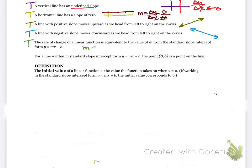The rate of change of a linear function is equivalent to the value of m from the standard slope-intercept form y equals mx plus b — that is true, so slope equals the rate of change. For a line written in standard slope-intercept form y equals mx plus b, the point (0, b) is on the line — that's correct. This point is the y-intercept, and it happens when x is 0. So all those statements were true.